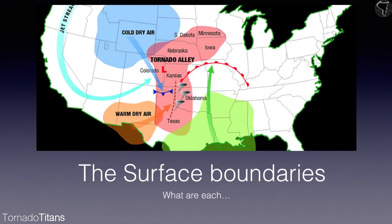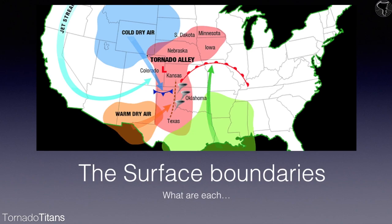This image is from the NSSL — found on Wikipedia but sourced from the NSSL — and it shows the surface boundaries. Tornado Alley is mislabeled in my opinion, but anyway. When we're talking about surface boundaries, we're talking about air masses colliding: warm moist air moving north, cold drier moving south, warm drier moving east. Where warm moisture and warm drier meet, that's a dry line. Where cold drier meets warm moist air, that's a cold front. Where warm moisture pushes north into cold drier, that's a warm front.